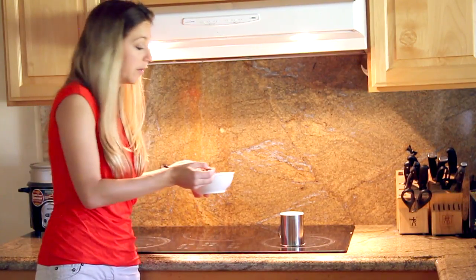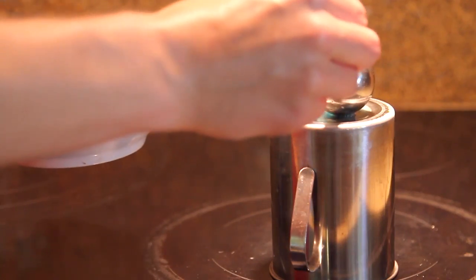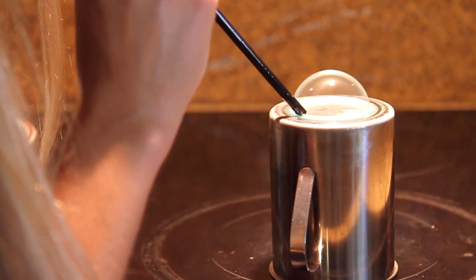I really want to make a hurricane in my kitchen, so let's do it. I'm going to put a little bit of bubble mixture on the top of this metal cup, blow a bubble, and then turn on the heat.